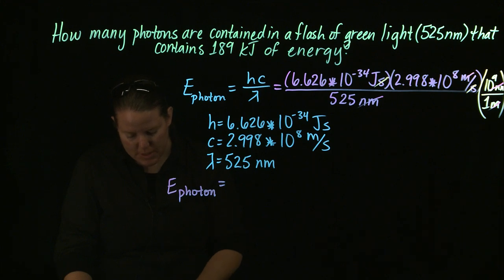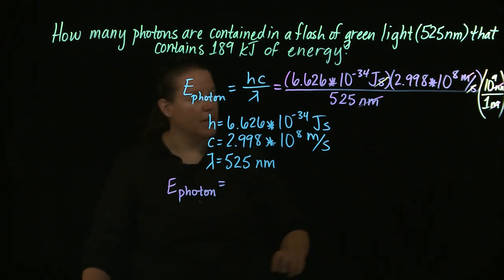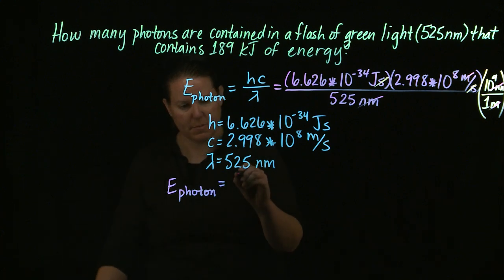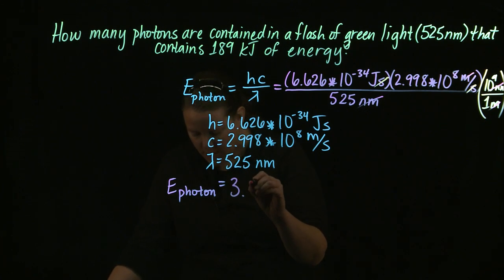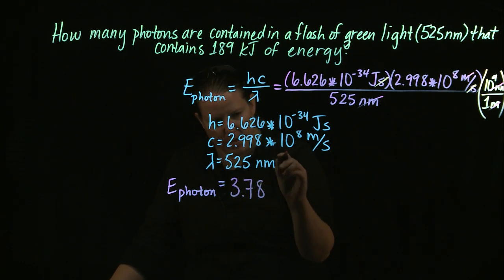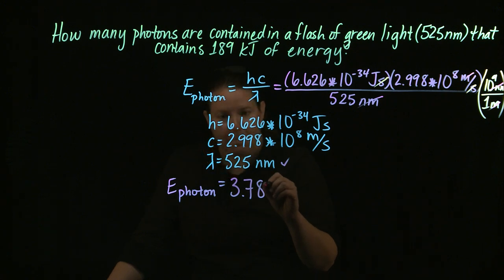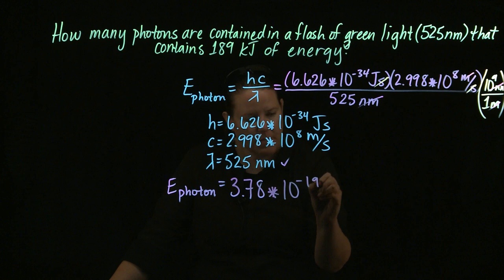6.626 times 10 to the negative 34th, times 2.998, times 10 to the eighth, times 1EE9. That's how I plug in my lovely nanometer conversion. Divided by 525, I get a cool number that's times 10 to the negative 19th. We know that if it's visible light, which this checks out as visible light, it's between 400 and 750 nanometers, then I should probably get some number times 10 to the negative 19th in joules.